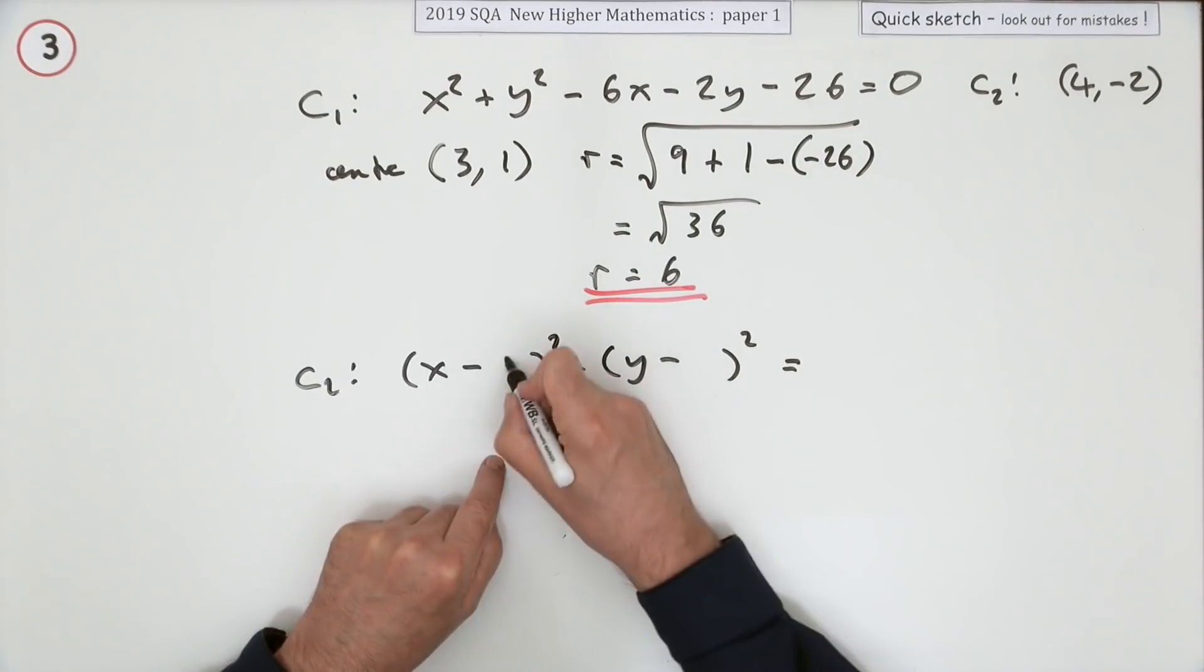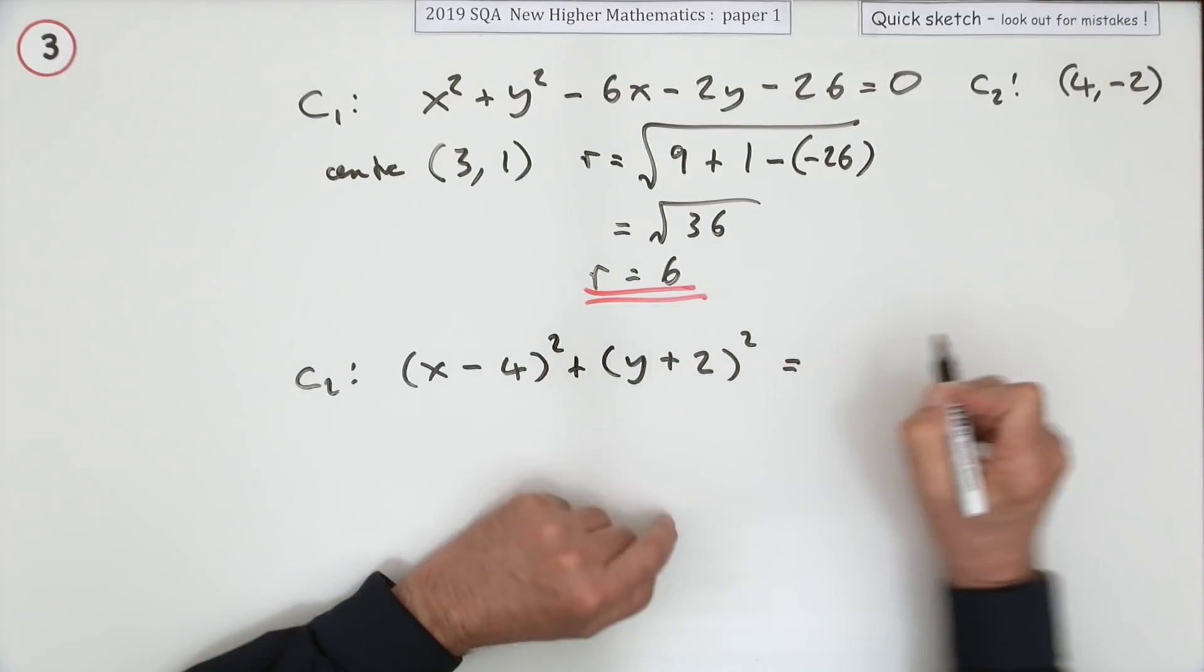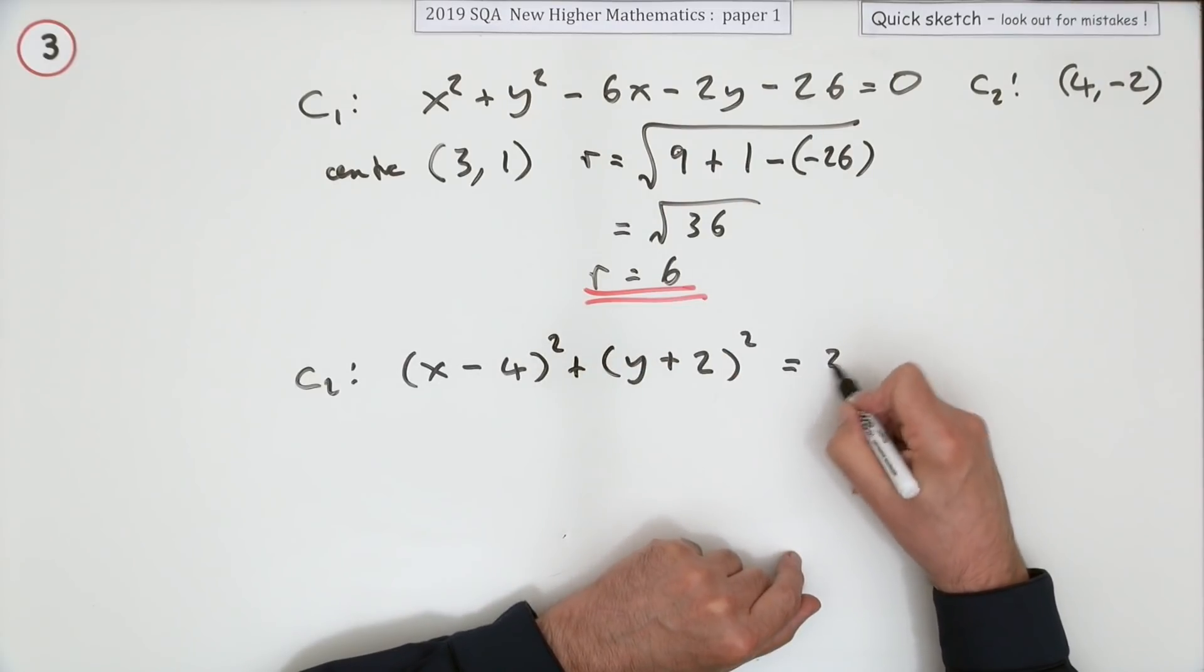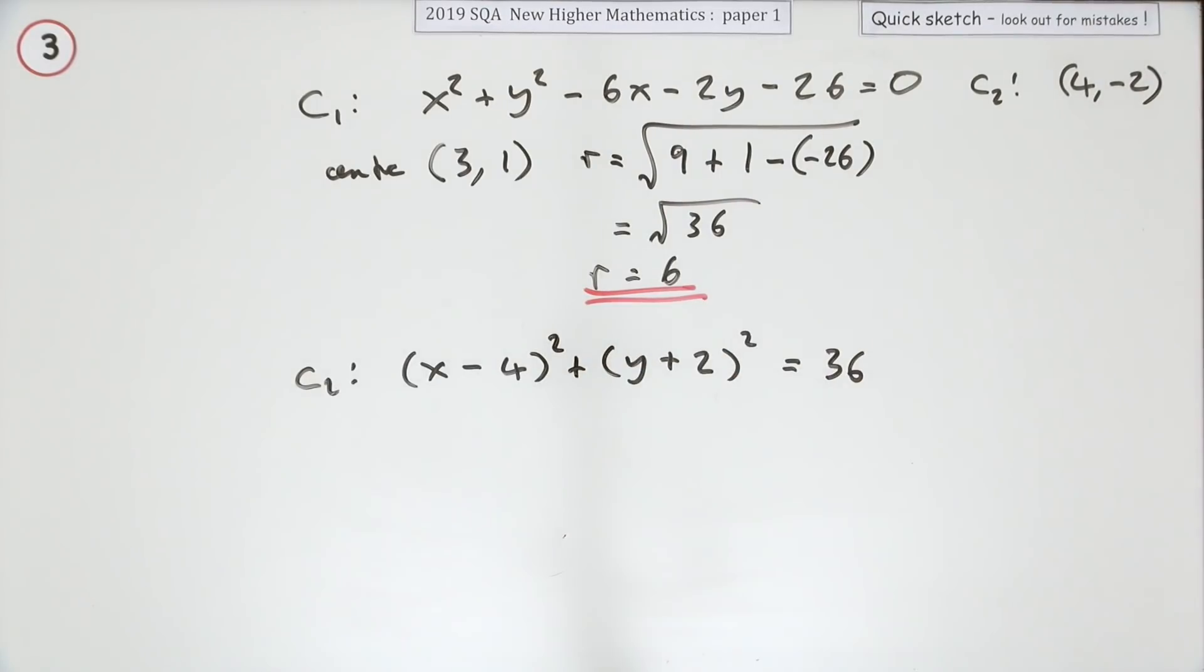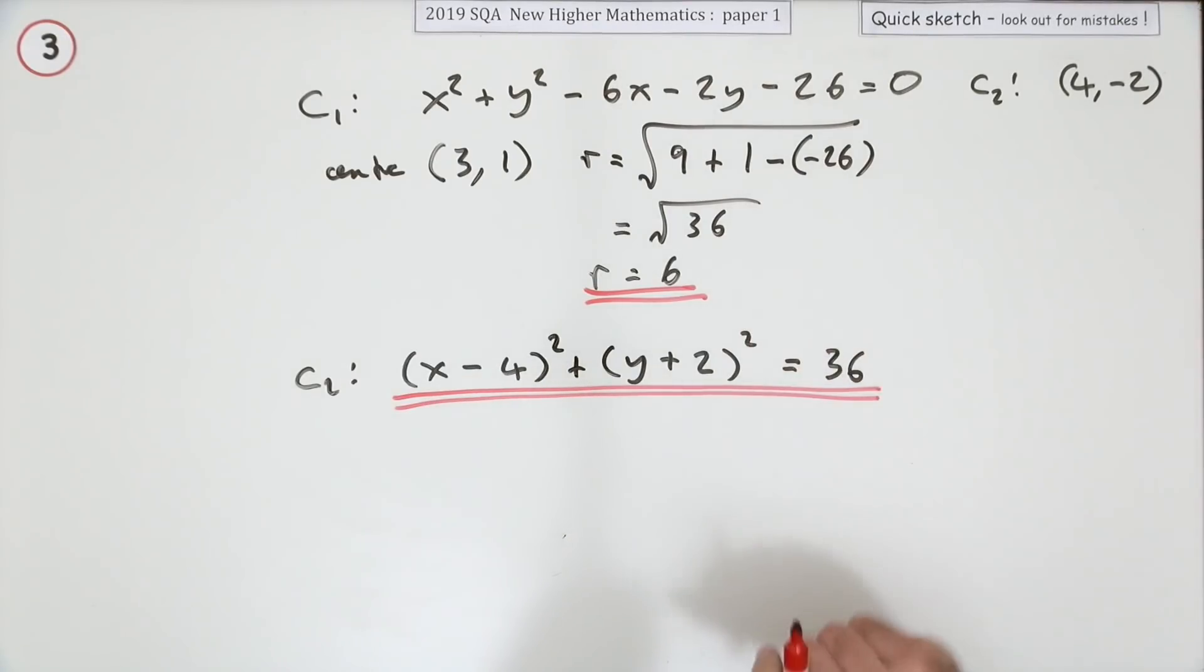Well, it's x minus 4, it's y minus negative 2, so it'll be y plus 2 and radius squared, don't put 6 squared, it's 36. There. That's another two marks for you.